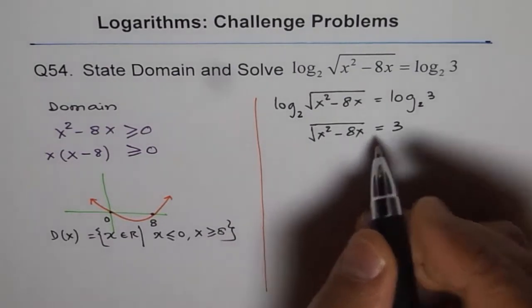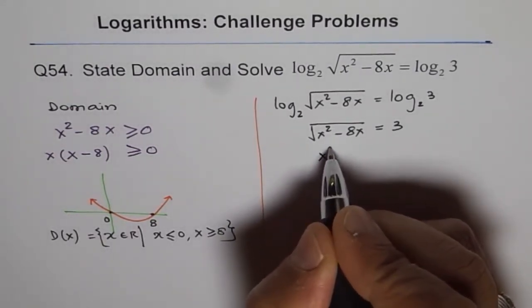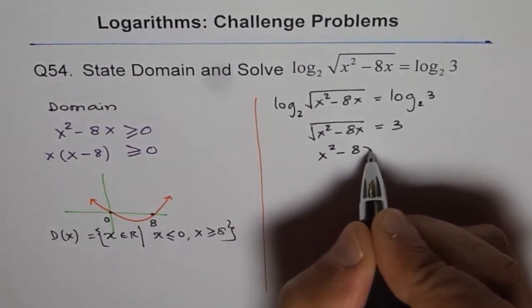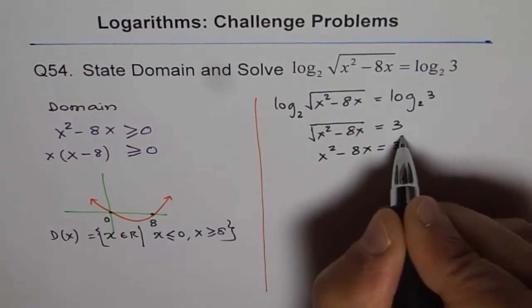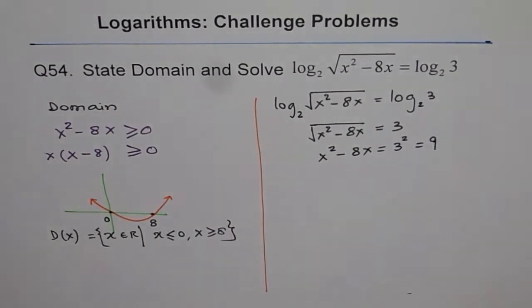Now, to get rid of square root, we can square both sides. So, we get x squared minus 8x is equal to 3 squared, which is 9, right? So which is 9.